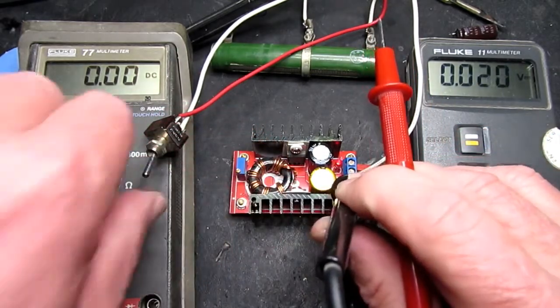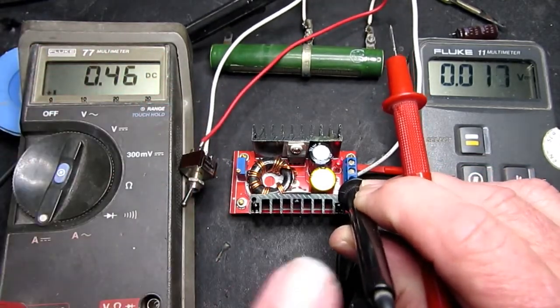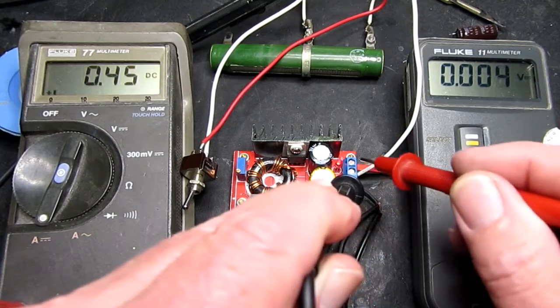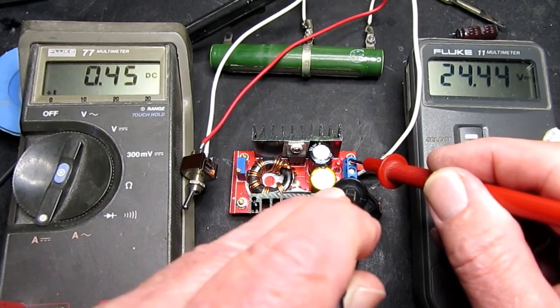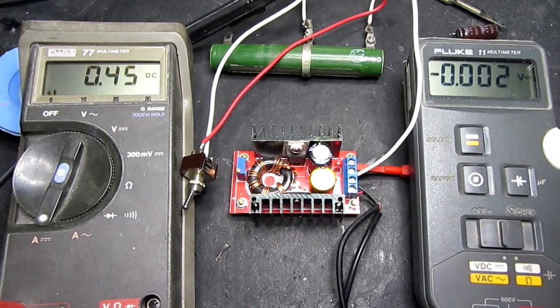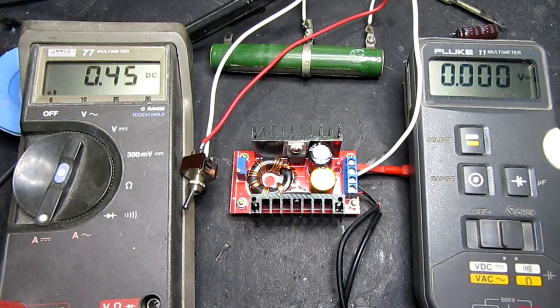Now we switch in the load. We can see it's just under half an amp. And we've still got our 24 volts out. So that was a relatively straightforward repair. Just a thing to watch out for there on these capacitors.